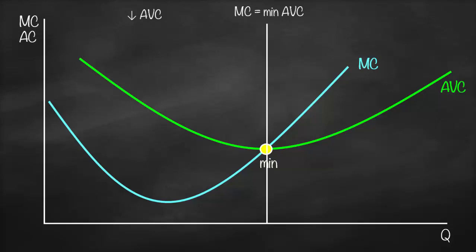At a lower average variable cost, it means marginal cost will have a lower value compared to average variable cost, which means marginal cost will be below average variable cost.